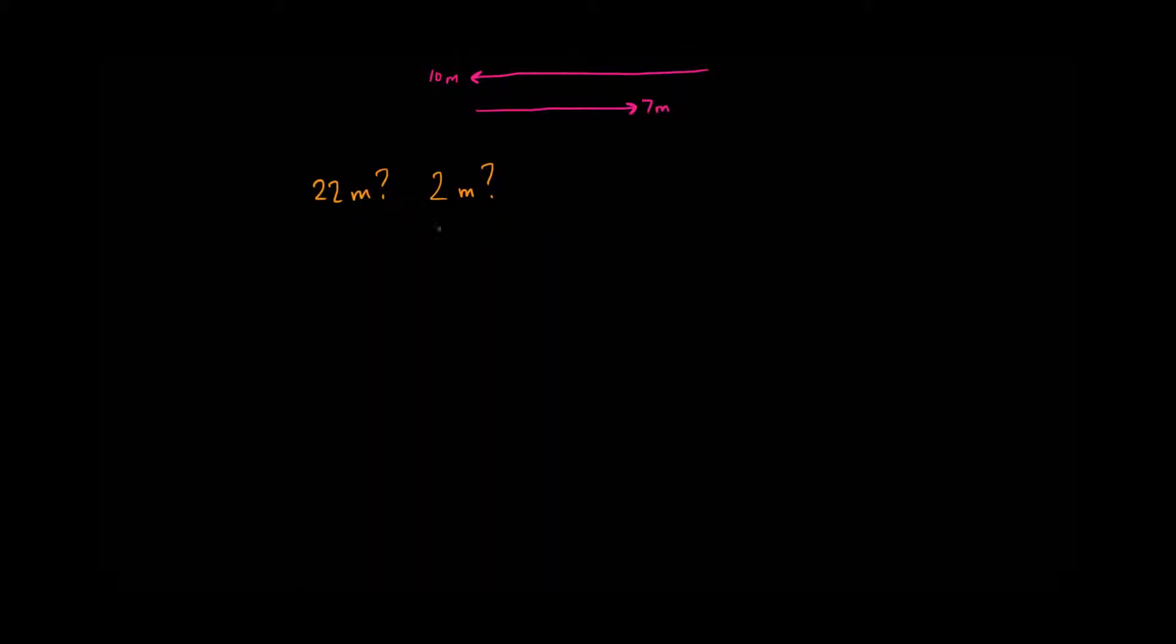Now, the discussion between which of these answers is correct is related to distance versus displacement. If someone asked what distance I traveled, you would say 22 meters, so this is distance. And then if someone asked what displacement I traveled, you would say 2 meters, so this is displacement.